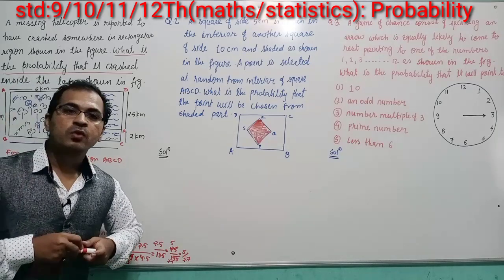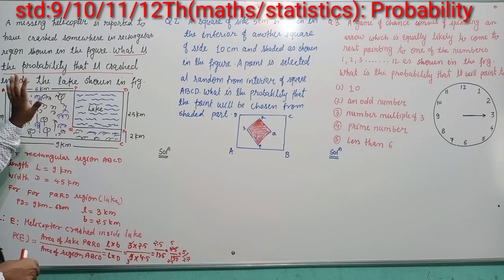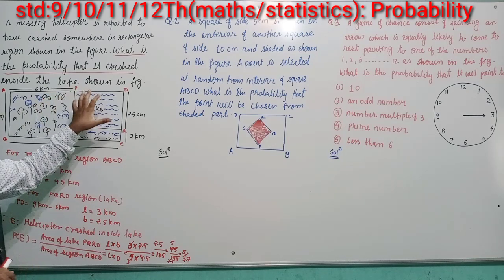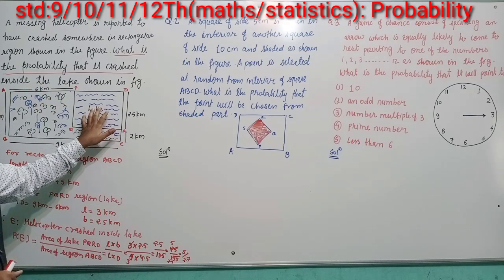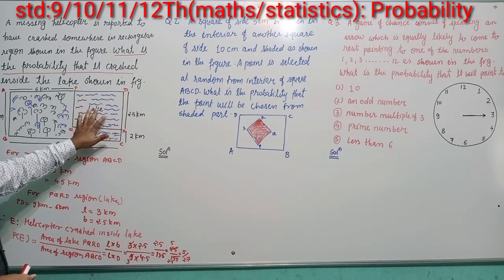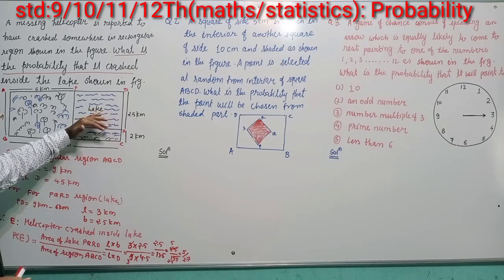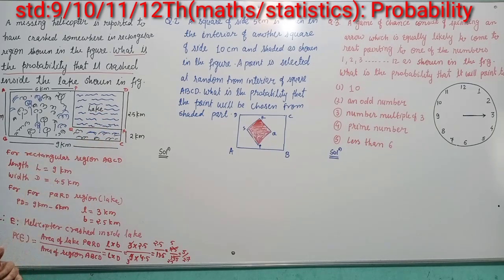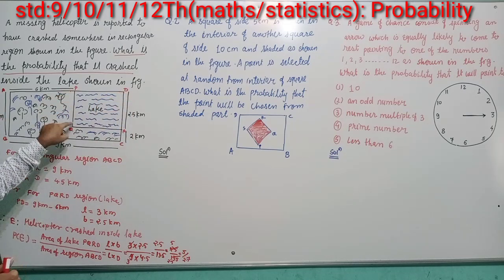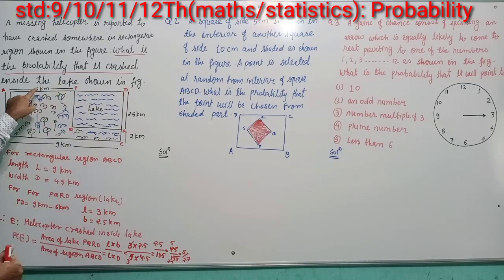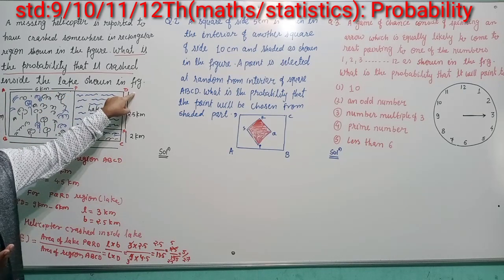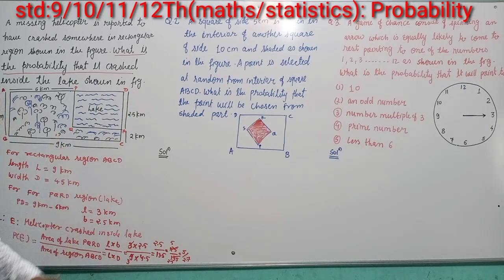To summarize question one: you find the probability that the helicopter crashed inside the lake by taking the area of rectangular region ABCD as the sample space and the area of the lake as the favorable event. As per the definition of probability — favorable event divided by total number of events — the answer is 5/27. Now moving to the next question.